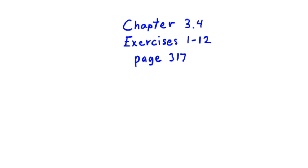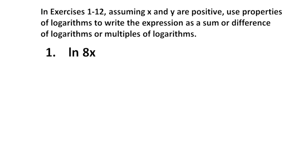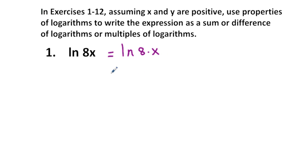Chapter 3.4, exercises 1 through 12. Section 3.4 has to do with properties of logarithmic functions. In exercises 1 through 12, assuming x and y are positive, we use properties of logarithms to write the expression as a sum or difference of logarithms or multiples of logarithms. In problem 1, we have the natural logarithm — log base e — of the two factors 8 and x multiplied together. The property of logarithms states that the logarithm of two factors equals the logarithm of one factor plus the logarithm of the other.